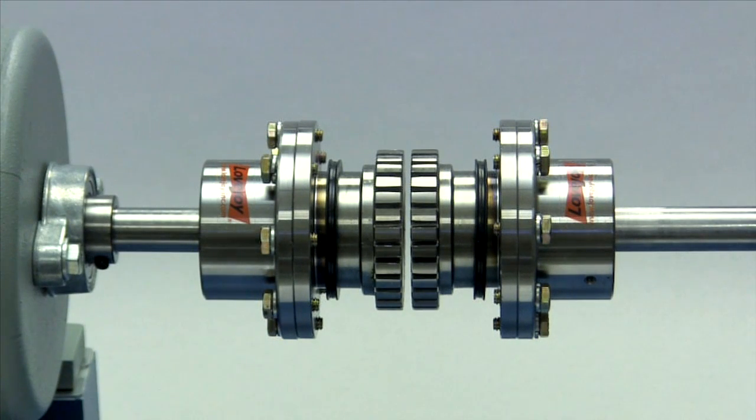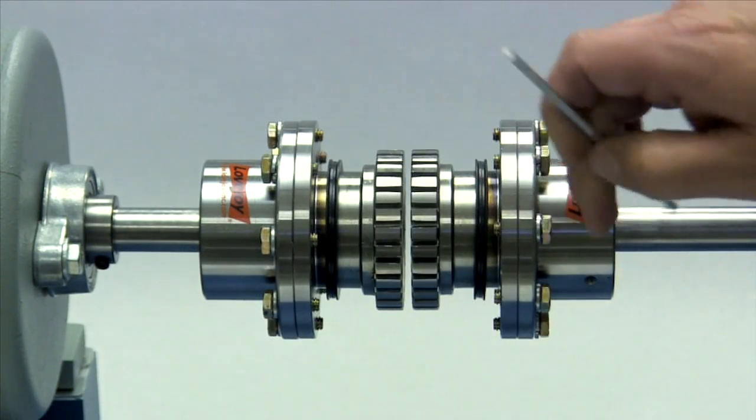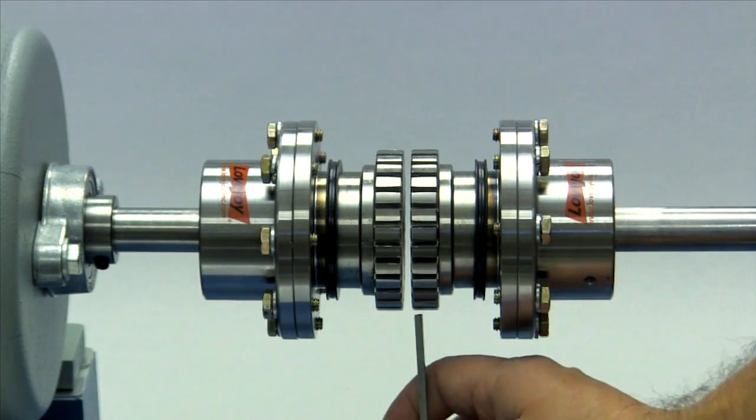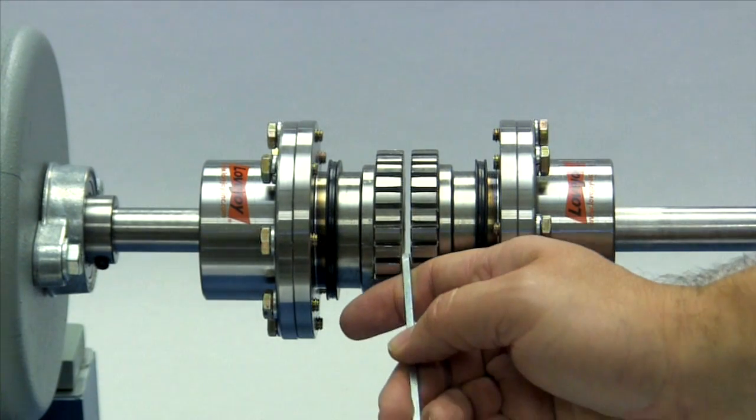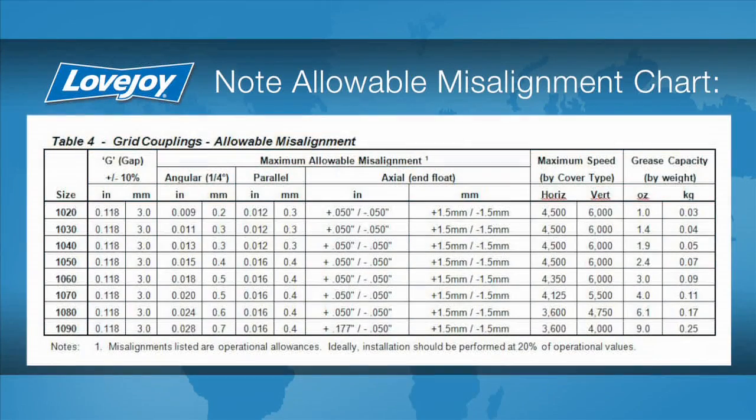The angular and axial alignment can be checked using either a spacer bar or vernier calipers to measure the gap between the faces of the hubs. If space permits, this measurement should be taken as close as possible to the edge of the grid teeth at four different locations around the coupling: three o'clock, six o'clock, nine o'clock, and twelve o'clock. The difference between any two of these measurements should fall within the range specified in the installation guide under the heading angular. If the deviation exceeds the angular value specified, you will need to realign the equipment to correct this condition.